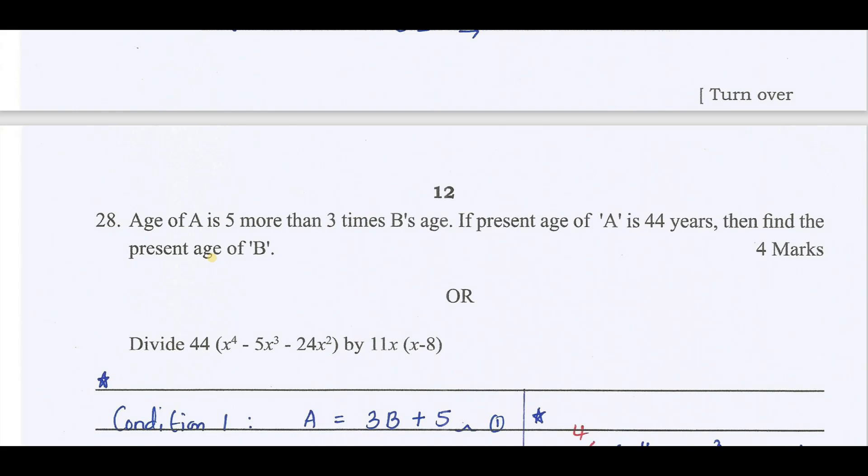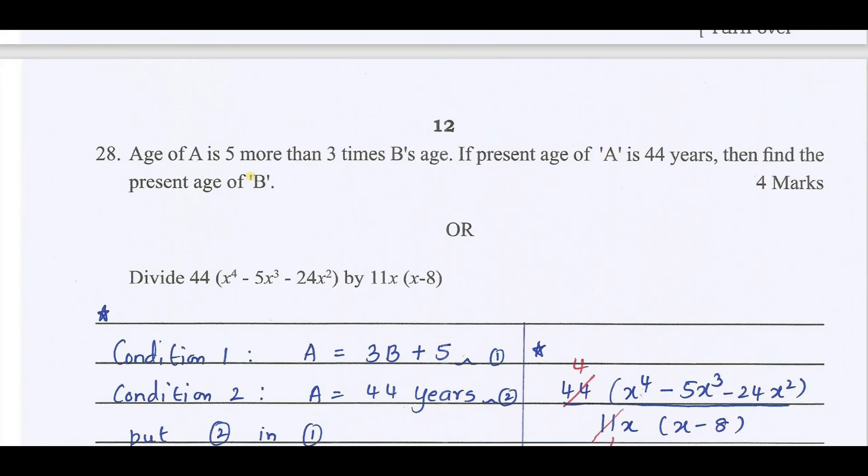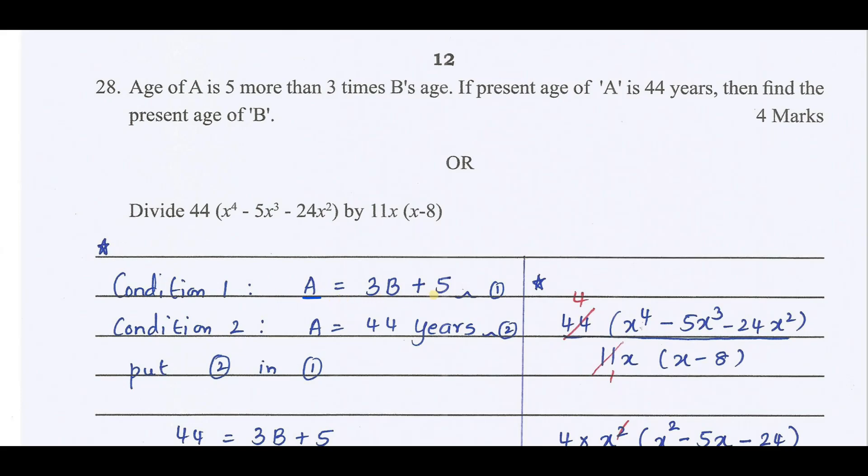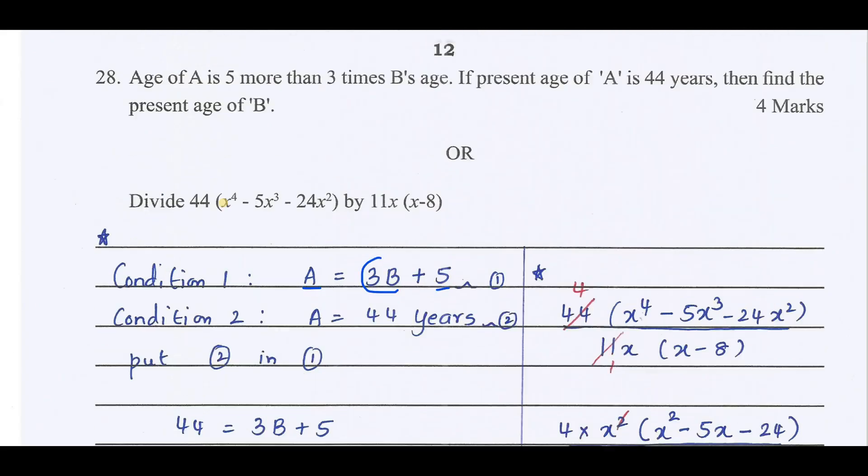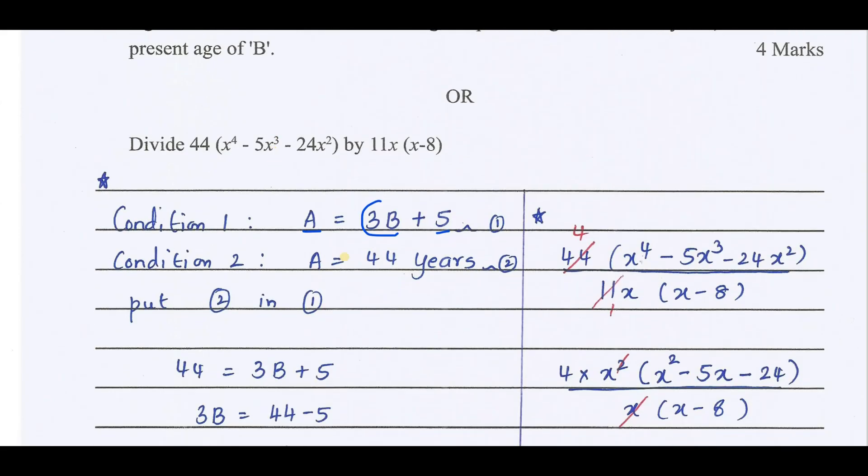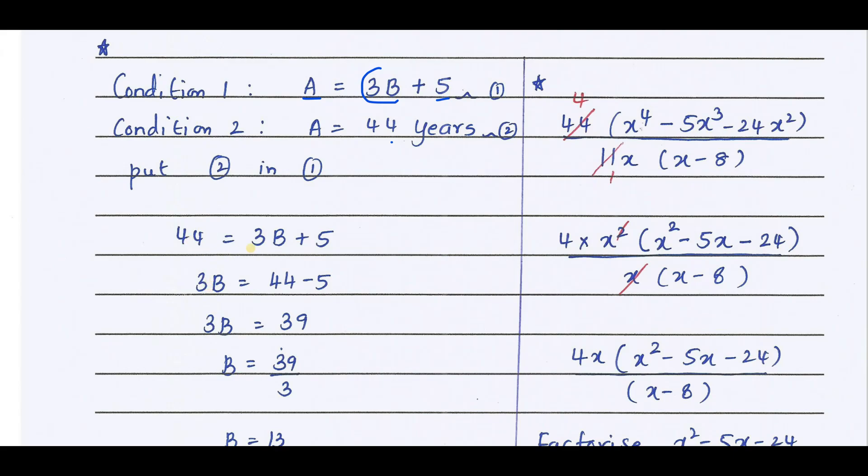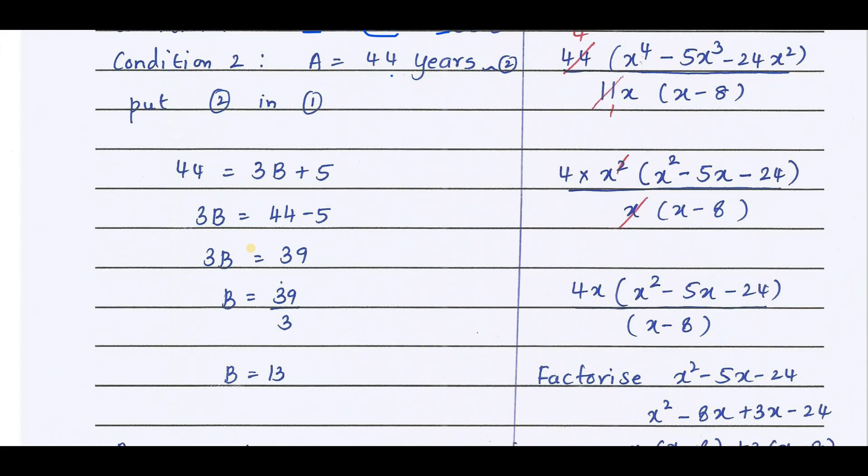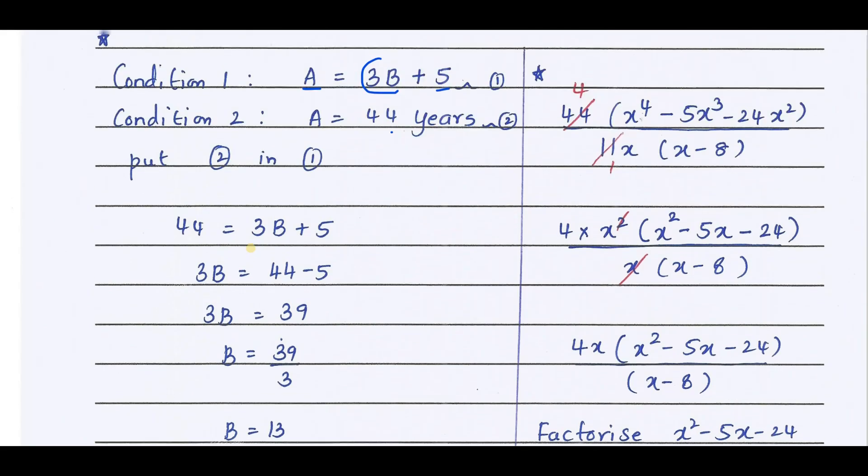Age of A is 5 more than 3 times the age of B. The present age of A is 44 years. Find the present age of B. It is a direct condition. Substitute the value of equation 2 in 1. What we get is 44 equals 3B plus 5. Now, age of B is 13 years.